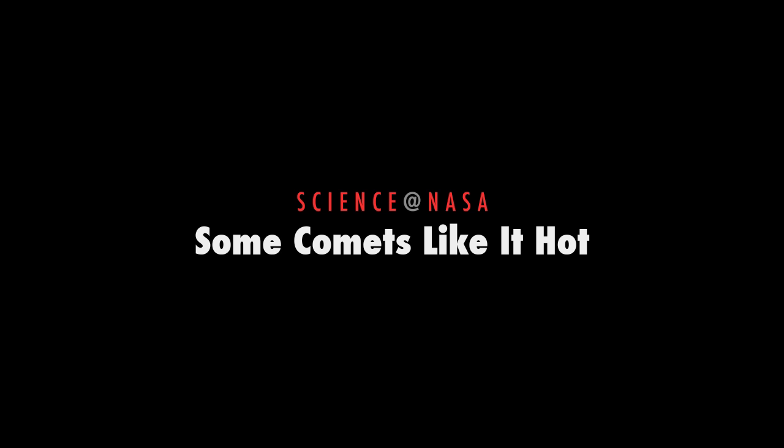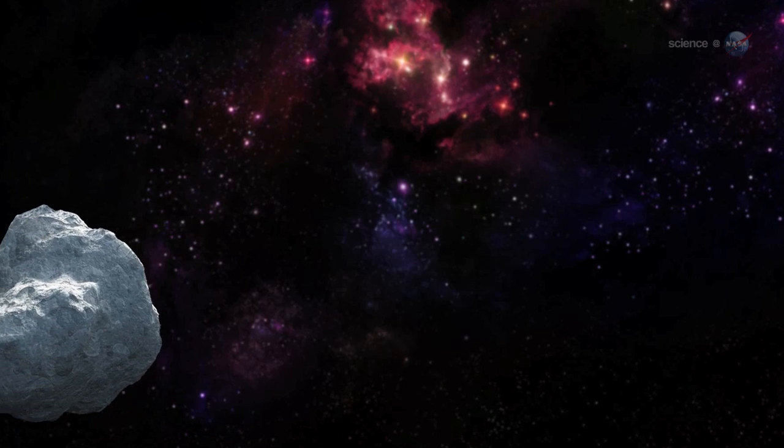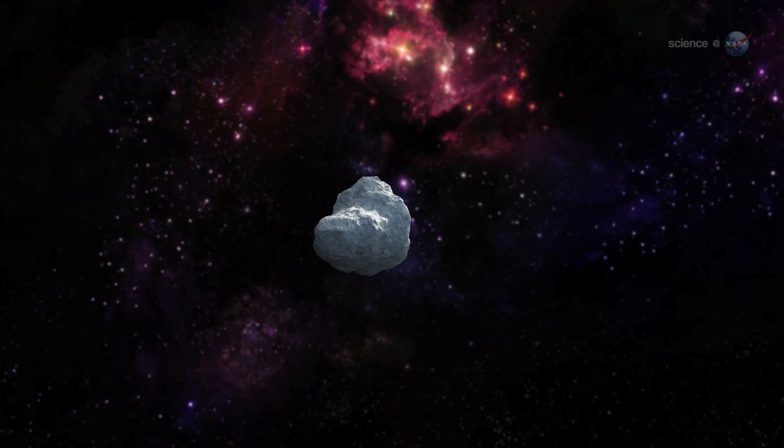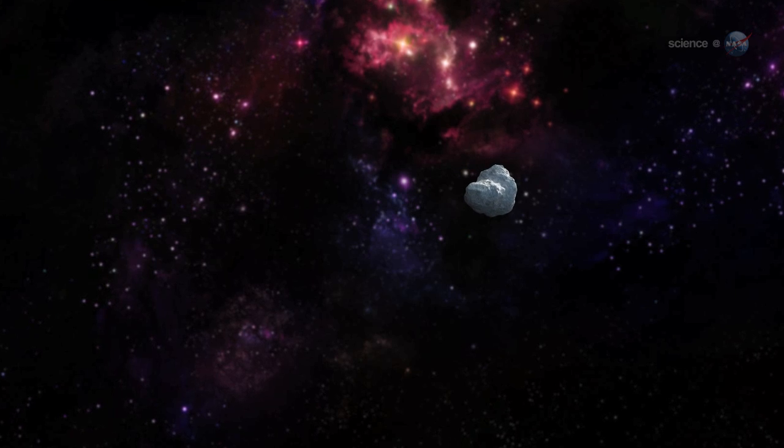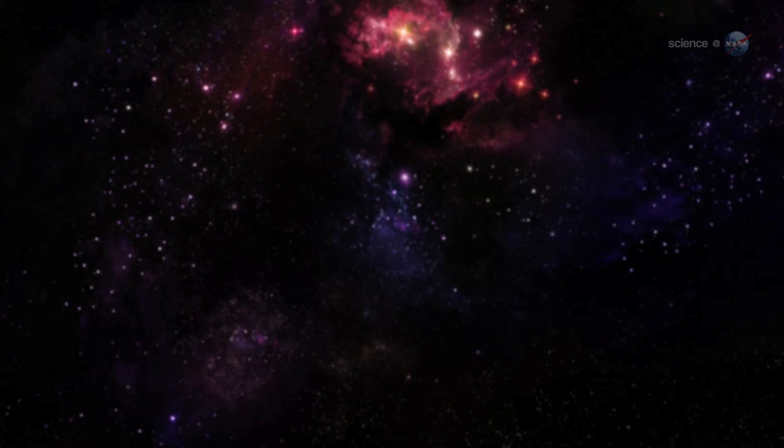Some Comets Like It Hot, presented by Science at NASA. Comets are icy and fragile. They spend most of their time orbiting through the dark outskirts of the Solar System, safe from the withering depredations of intense sunlight. Their natural habitat is the deepest cold.